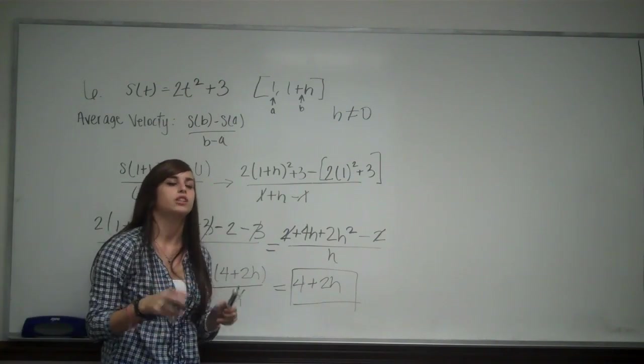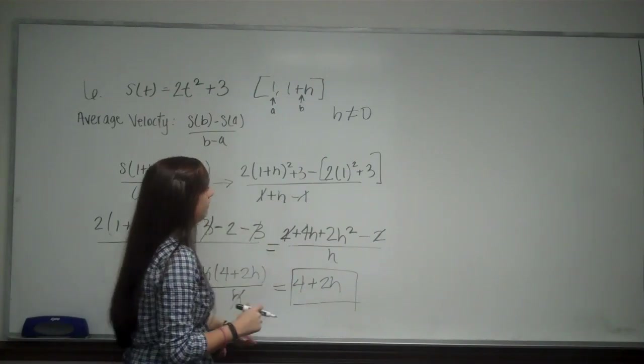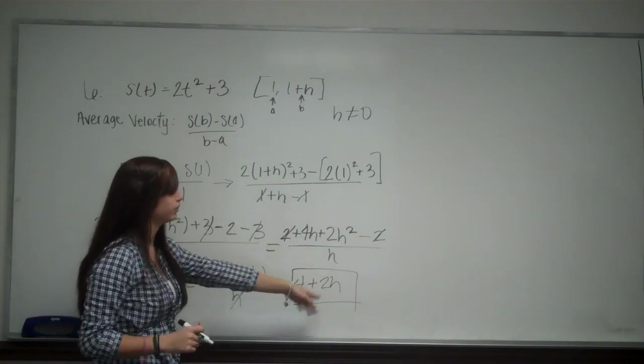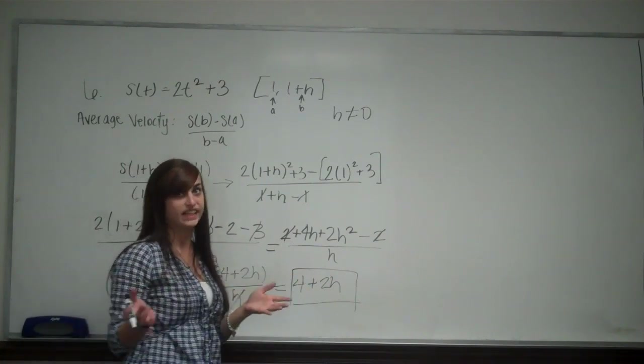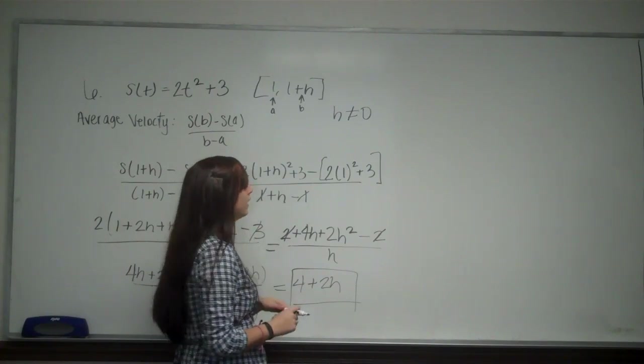Now, the second part, I want you to find the instantaneous velocity after 1 second. A very common mistake would just be to plug in 1 into this equation. If I were to plug in 1 for h, I'd get 6. And of course, 6 is an answer choice, but that's not the one you want to pick.